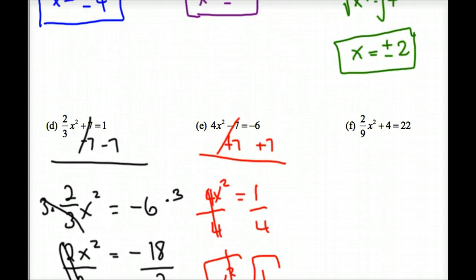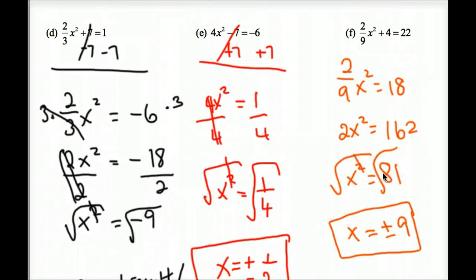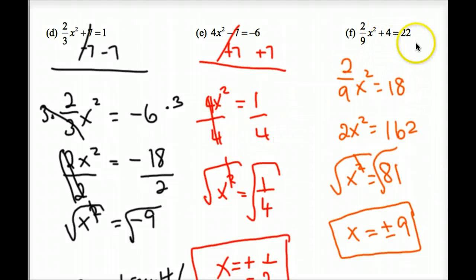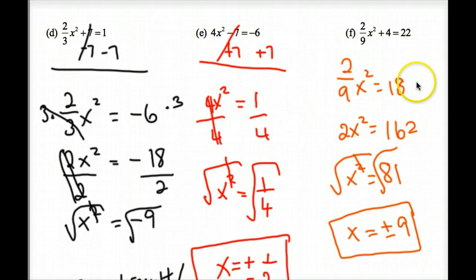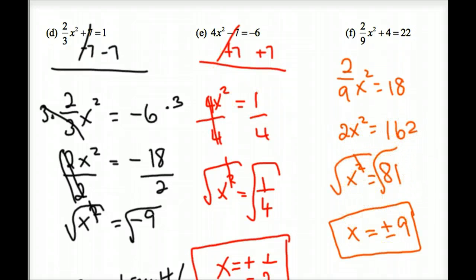Now our last one — pause the video and try it on your own. I hope you got X equals plus or minus 9. We start by subtracting 4 on both sides, then multiply by 9 on both sides to get rid of the denominator, then divide both sides by 2 and take the square root. Good job.